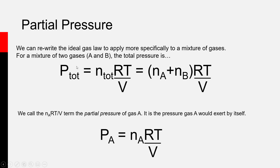We can say that the total pressure exerted by this mixture, even though there are two gas phase chemicals in it, is equal to the total number of moles — moles of A plus moles of B — times the gas constant R, times T, divided by V. And we can actually separate that out: N_total is moles of A plus moles of B.